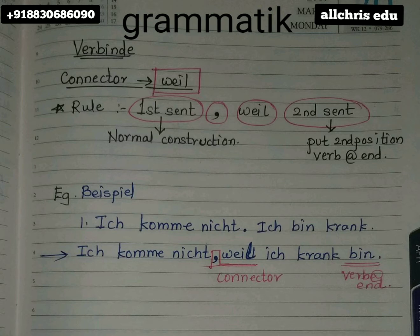To talk more about grammar, I can tell you that 'weil' is a subordinating clause word, called a subordinating conjunction. But at present, don't worry about the name — focus on how to apply it. W-E-I-L 'weil' is like the word 'because' that we use in a sentence.